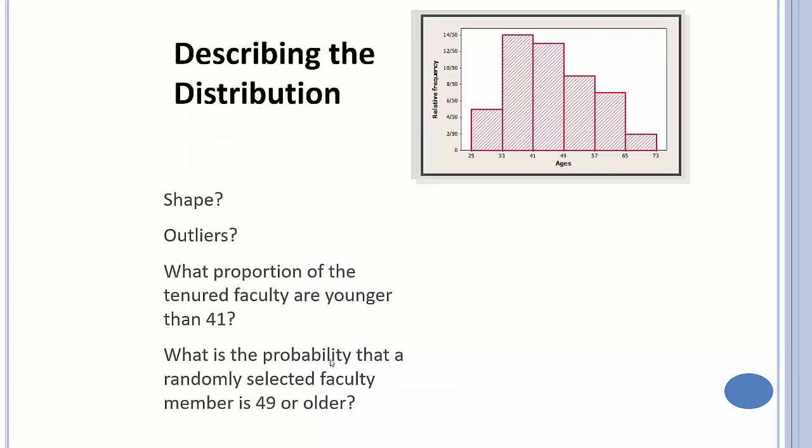So what does the shape tell us? It's roughly symmetrical, maybe a little skewed right because it kind of trails off to the right a little bit more than it does to the left. What proportion of the tenured faculty are younger than 41? Well, you could easily just add these, so that's about 5 out of 50 and 14, so that gives you 19 out of 50, so it's about 38%, and so on and so forth.